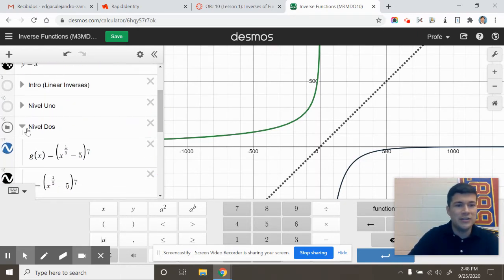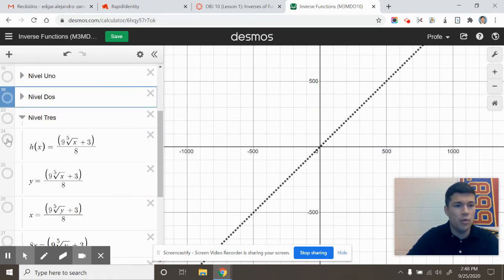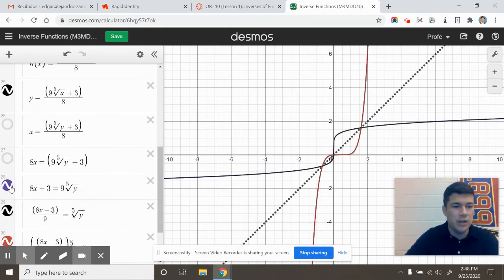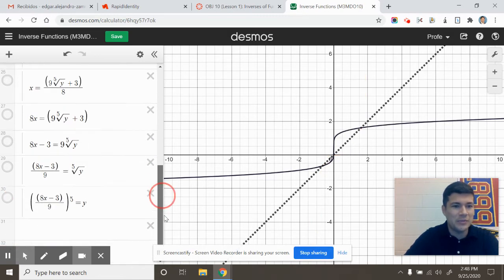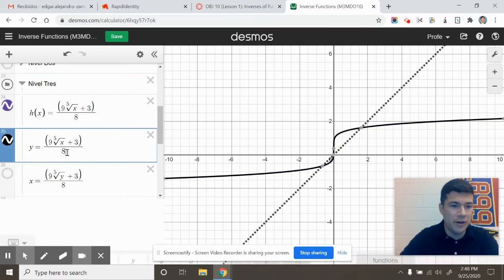And we'll do one last out-of-this-world example. So what if I have, let's go back home. And you can see that I've already got my inverse functions. But what if I have y equals nine times the fifth root of x plus three divided by eight?